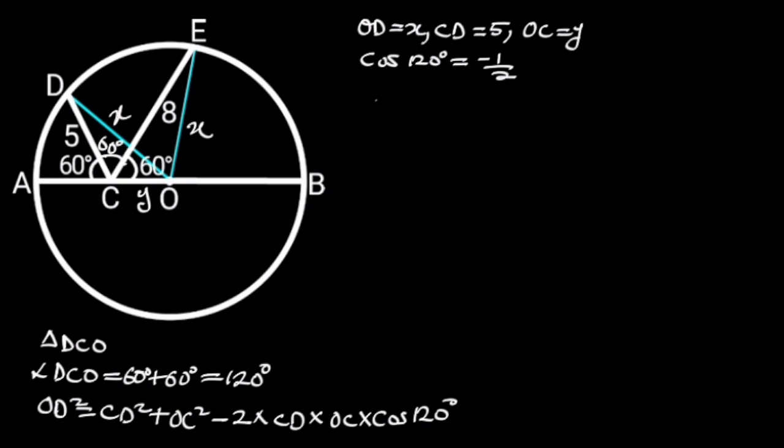Substituting these values in the above formula will give us, X squared is equal to 5 squared plus Y squared minus 2 times 5 times Y times minus 1 over 2.